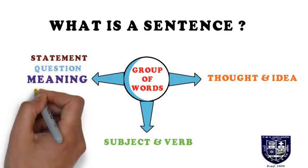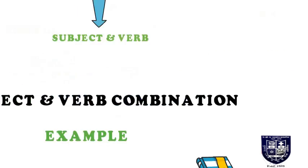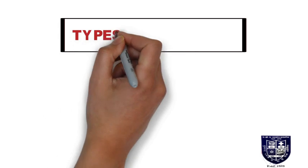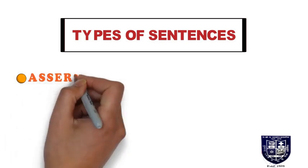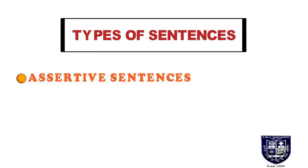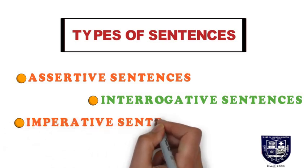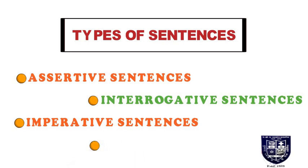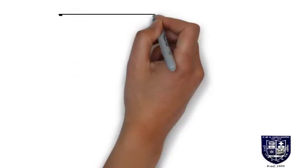The next and very important third characteristic is meaning. It is very important because it provides us with meaningful sentences based on different expressions of statement, question, command, and exclamation. So let us start with the four kinds of sentences. There are basically four types: firstly, assertive sentence; next, interrogative sentence; then imperative sentence; and finally, exclamatory sentence.